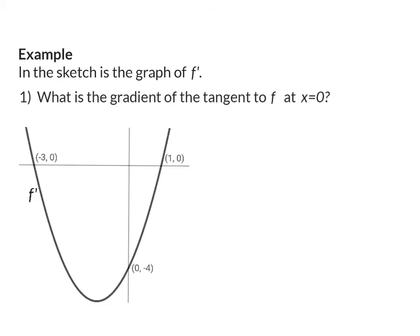Let's have a look at an example. In the sketch is the graph of the derivative. What is the gradient of the tangent to f at x = 0? Here you need to remember that the derivative indicates the gradient of f. So if we need to determine the gradient of f at x = 0, it means we need to calculate f'(x) where x is 0. We have been given the graph of f'(x), so all we need to do is determine what the y value is when x is 0, and here we can see that that is minus four. So the gradient of the tangent of f at x = 0 will be minus four.